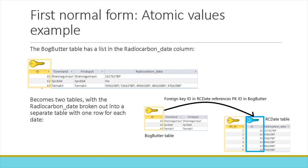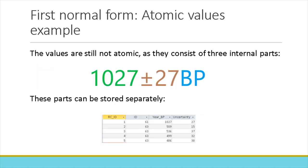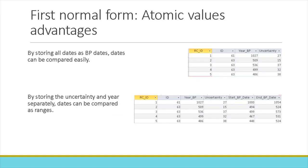The values for the radiocarbon dates themselves are still not atomic, as they consist of three internal parts: the year, the uncertainty, and the dating system (such as before-present, common era, and so on). To put this into first normal form, the parts can be stored separately in their own columns. Since all our dates in this bog-butter table are BP dates, we can simply store the year BP and the uncertainty. By storing all dates as BP dates, the dates can be compared easily, and by storing the uncertainty and the year separately, the dates can be compared as ranges. Breaking down composite values into atomic values gives us more opportunities for data analysis.